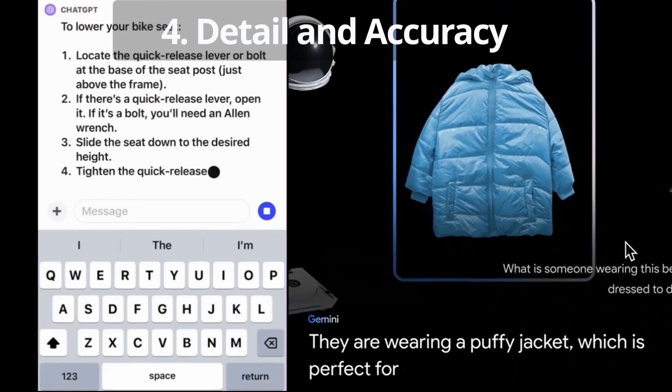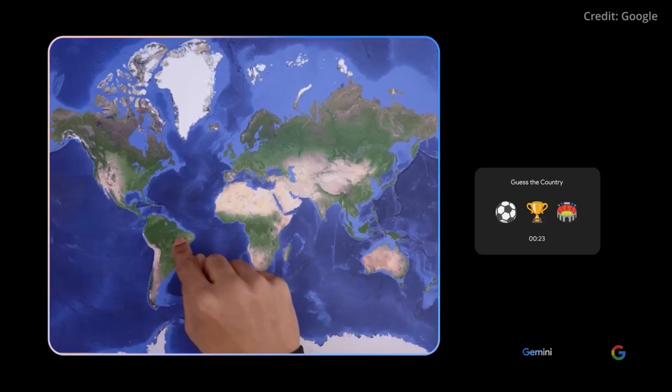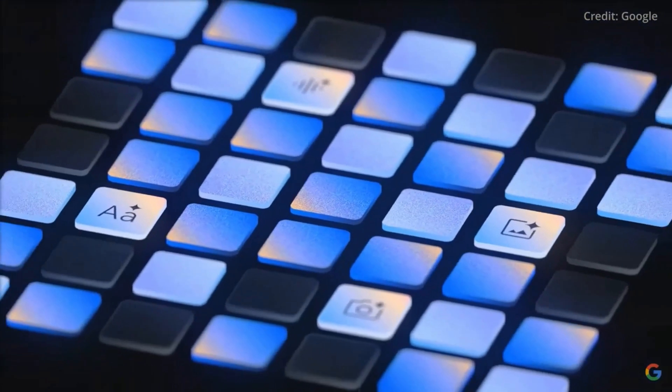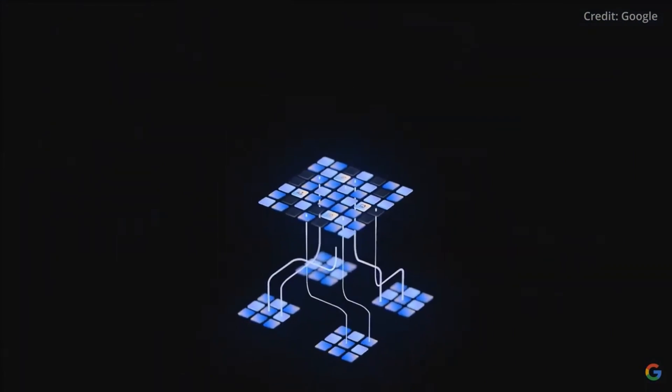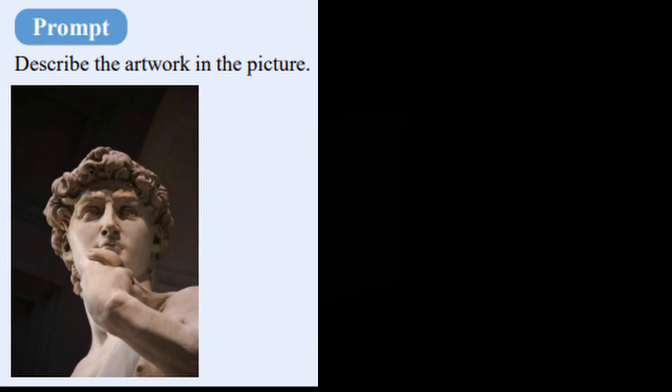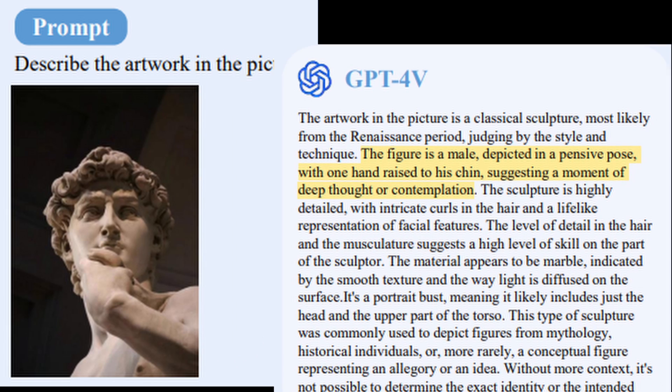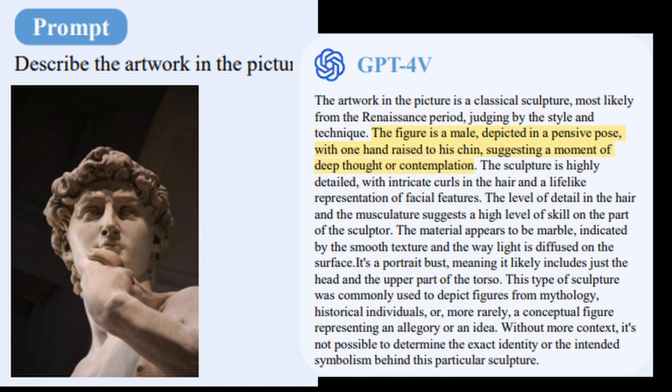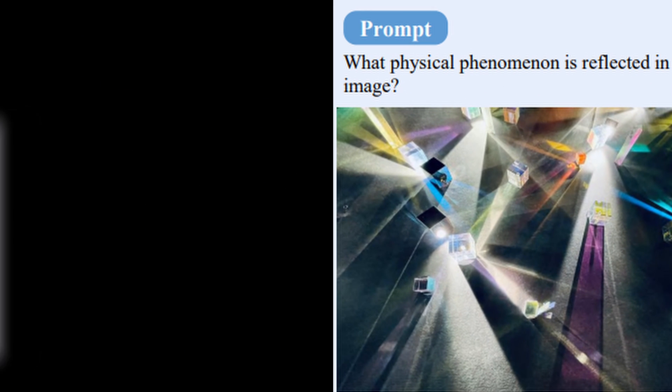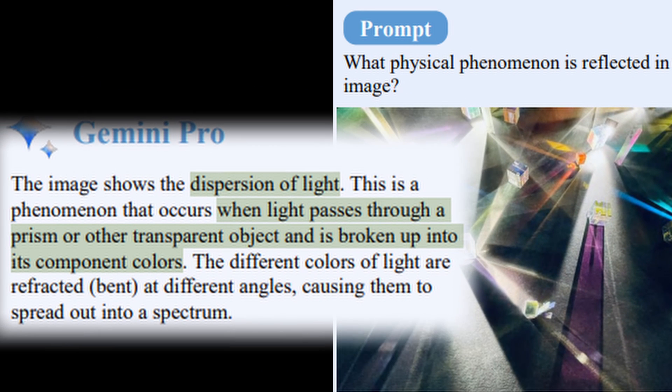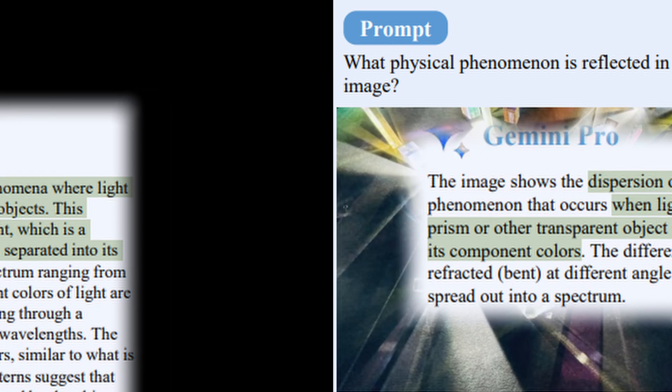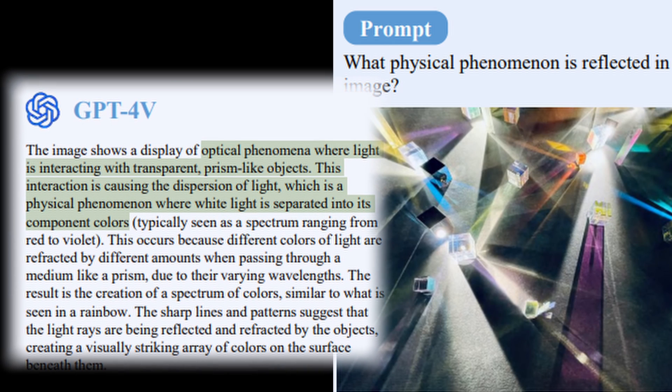Number four: detail and accuracy. The research teams observed varied levels of detail and accuracy in responses from both models. Interestingly, one group found Gemini Pro to provide more detailed and concise responses, while another group observed this characteristic in GPT-4V. Gemini Pro's unique feature is its ability to add relevant images and links to its responses, enhancing the user experience.